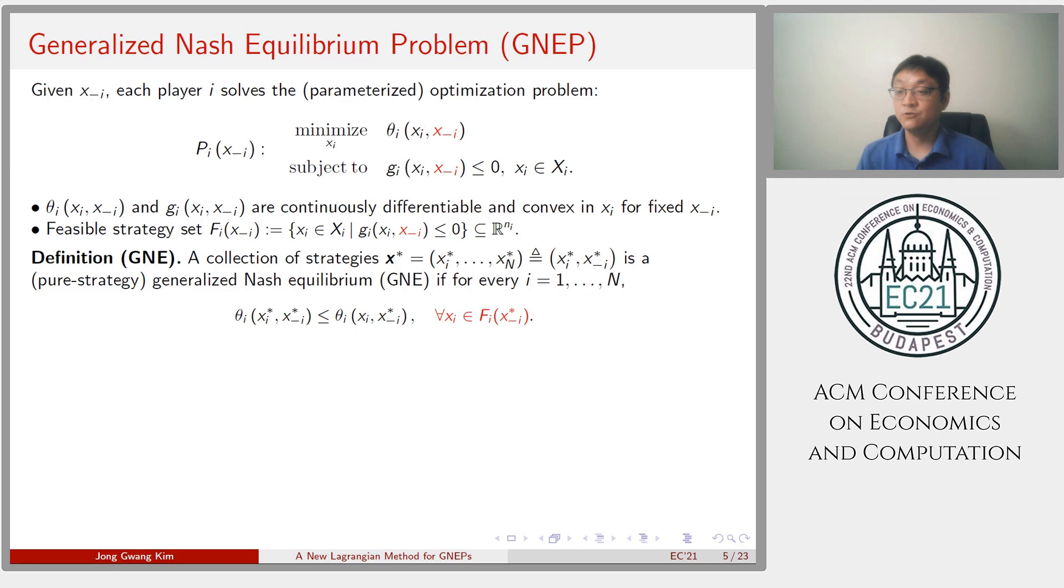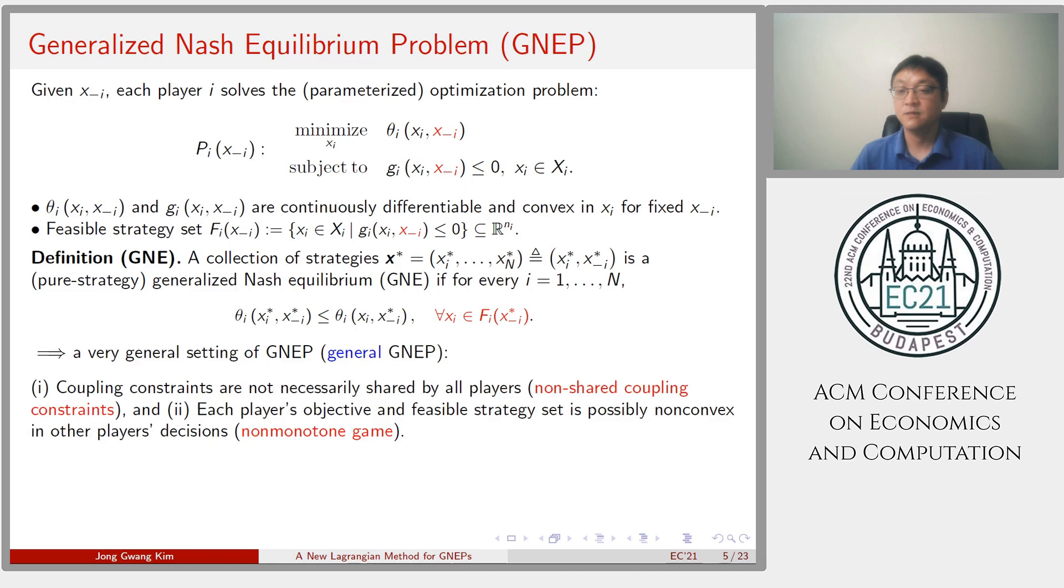In GNEP, given x_{-i}, each player i tries to solve the optimization problem. Here, objective function and the constraint functions are continuous differentiable and convex in x_i for fixed x_{-i}. Feasible strategy set is given by F_i(x_{-i}). In this setting, a point is called a generalized Nash equilibrium if the point satisfies inequality as well as the feasibility.